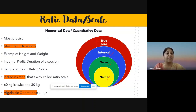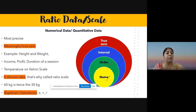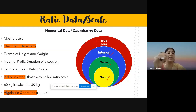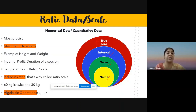Temperature on the Kelvin scale is another example because Kelvin has an absolute zero, which is why it falls under ratio scale. Because true zero exists, we can say 60 kg weight is twice as heavy as 30 kg weight. But in interval scale — for example Celsius temperature — we cannot say 60 degrees Celsius is twice as hot as 30 degrees Celsius, because true zero does not exist.